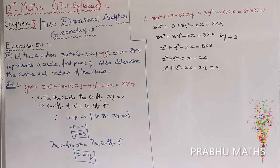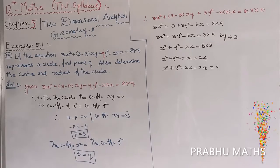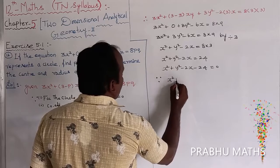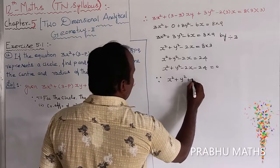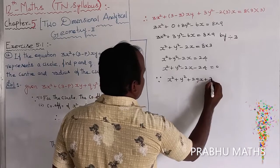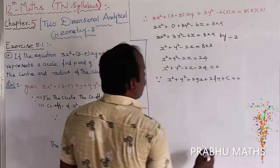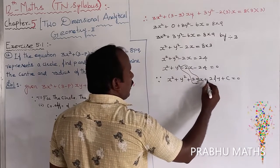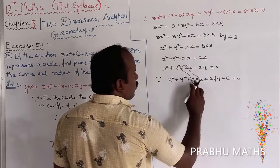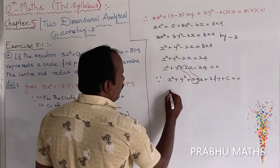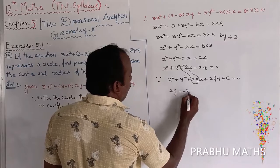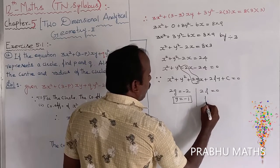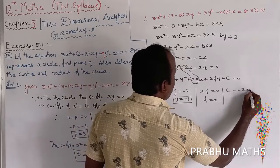To find the center and radius, we compare the equation with the general form x squared plus y squared plus 2gx plus 2fy plus c equals 0. From the x term, 2g equals minus 2, so g equals minus 1. From the y term, 2f equals 0, so f equals 0. The constant term gives c equals minus 24.